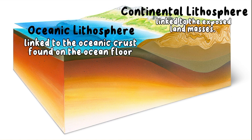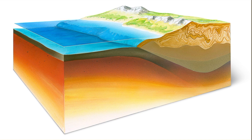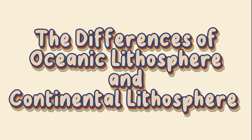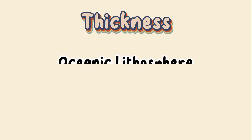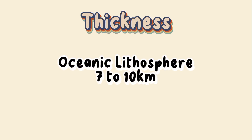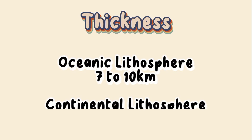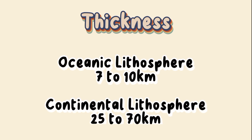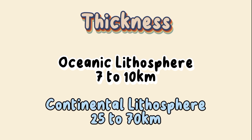The continental lithosphere is linked to the exposed land masses. Now let's talk about their differences. Number one: thickness. The oceanic crust has a thickness of 7 to 10 kilometers, which is much thinner than the continental crust, which has a thickness of 25 to 70 kilometers.